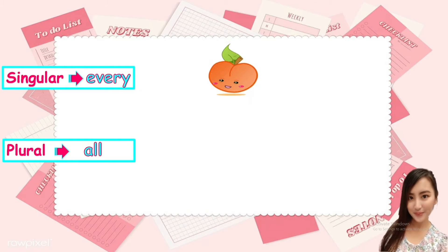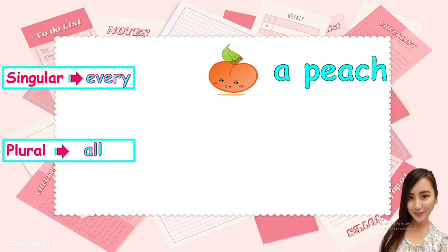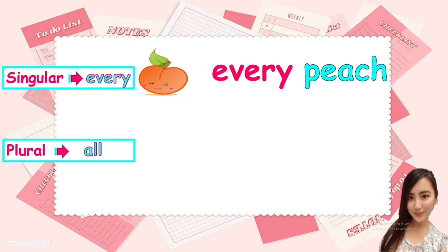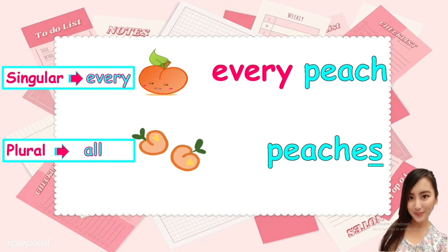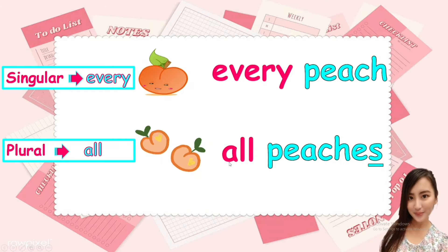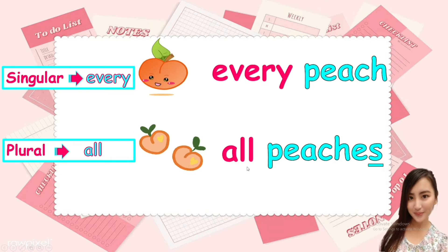Next, another example. A peach. This is singular, there is only one peach. Every peach. So we use every. Every peach. Next, peaches. This is plural because there are two. We use all. All peaches. Every peach. All peaches.